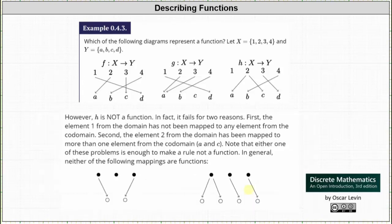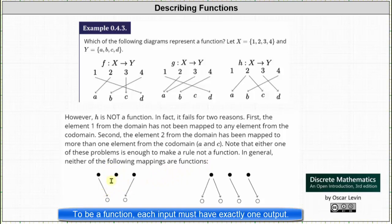Now let's consider h. Taking a close look, h is not a function and it fails for two reasons. First, the element one from the domain has not been mapped to any element from the codomain. Second, the element two in the domain has been mapped to more than one element of the codomain — the input two is mapped to two outputs, a and c. Note that either one of these failures alone is enough to make a rule or relation not a function. In general, neither of the following mappings are functions: on the left, an element in the domain is not mapped to any element in the codomain; on the right, an input is mapped to two elements in the codomain.